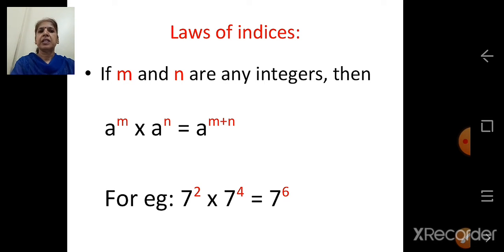Here the bases are same. For example, 7 raised to 2 into 7 raised to 4 is equal to 7 raised to 6. That is 2 plus 4 equals 6, so the answer is 7 raised to 6.